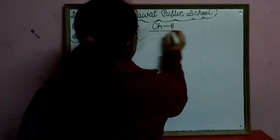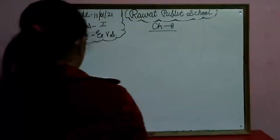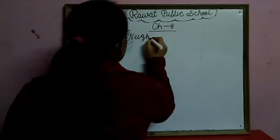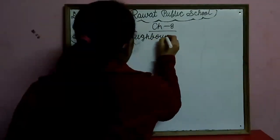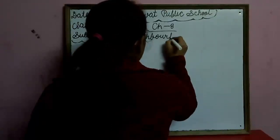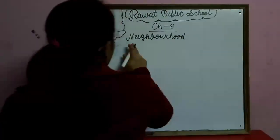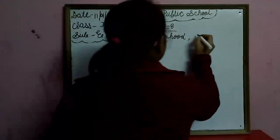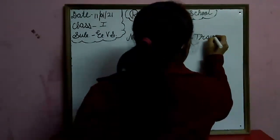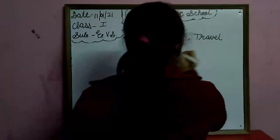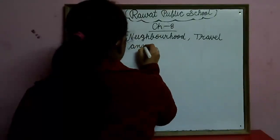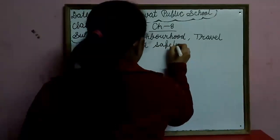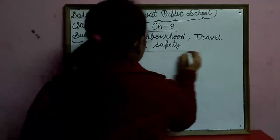Chapter 8: Neighborhood — N-E-I-G-H-B-O-U-R-H-O-O-D. Travel — T-R-A-V-E-L. Travel and Safety — S-A-F-E-T-Y. Safety. Okay?